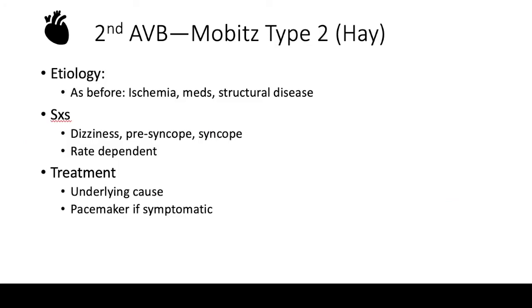Etiologies of second degree type two are similar to type one: ischemia, medications, or structural disease. The key clinical point is that these patients present with symptoms — dizziness, pre-syncope, or syncope — and the block is rate dependent, meaning it becomes more problematic as heart rate increases. Treatment is to fix the underlying cause: treat ischemia, stop medications, or address structural issues. Most of the time, for testing and in real life, symptomatic patients with type two will need a pacemaker.